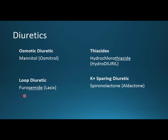The loop diuretic you'll probably see with more severe edematous conditions like congestive heart failure. Thiazides are usually going to be a first choice when you're talking about blood pressure and hypertension. And potassium-sparing diuretics generally are going to be paired with a thiazide diuretic or something like that to prevent hypokalemia.